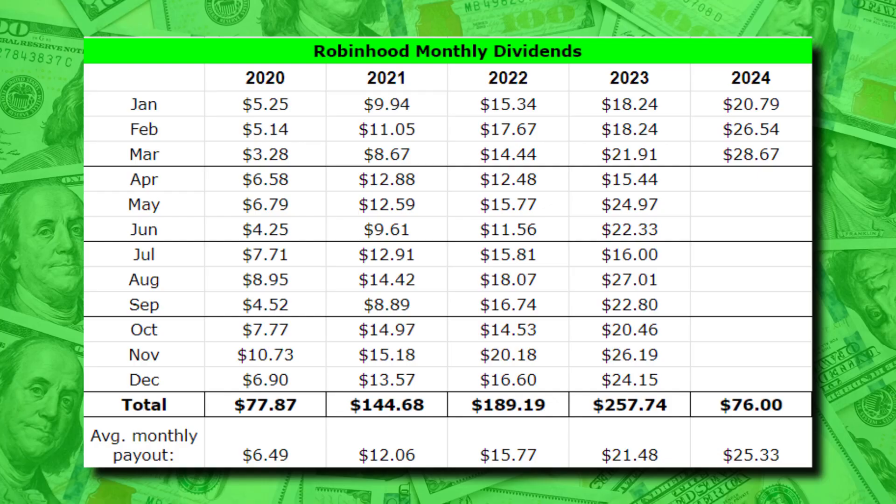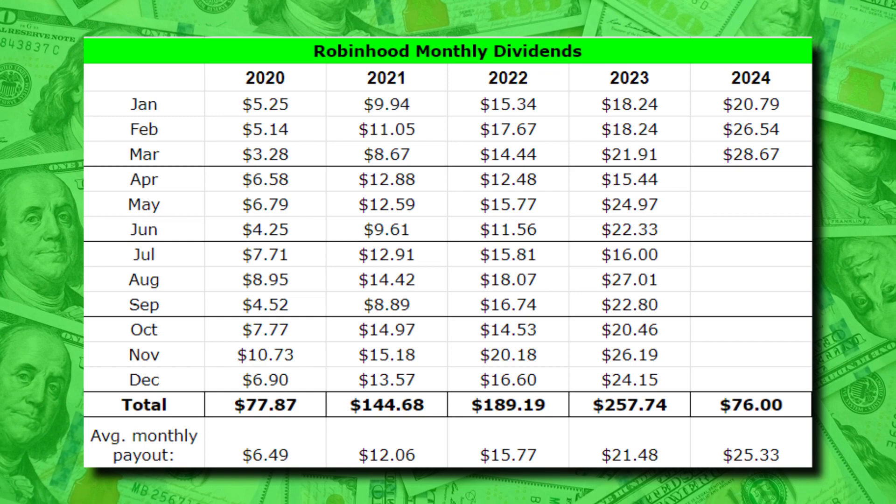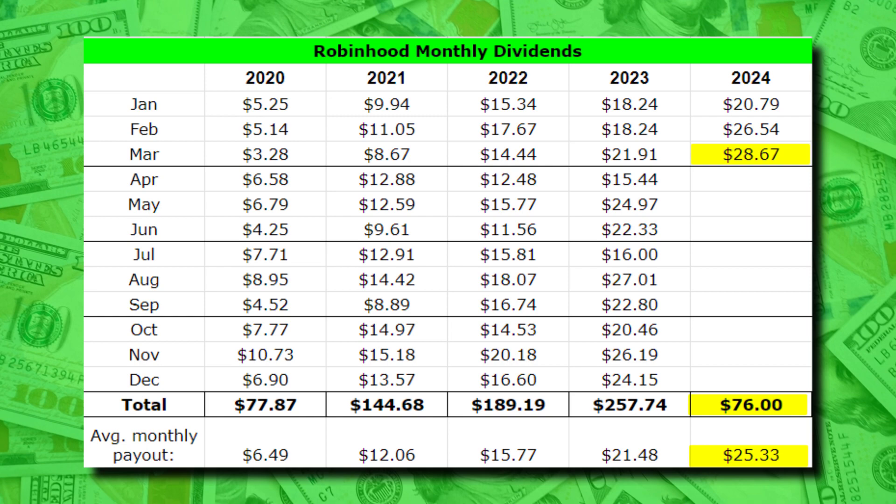That resulted in a grand total of $28.67 in passive income, which — aside from being a new all-time high for me — is also a little above 30% more than what I made in March of last year. My average payout at this point is $25.33, and my total dividends for the year so far is at $76, which is almost $20 more than after March of last year.